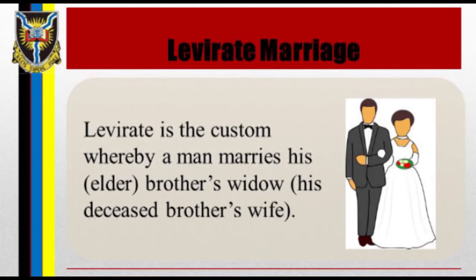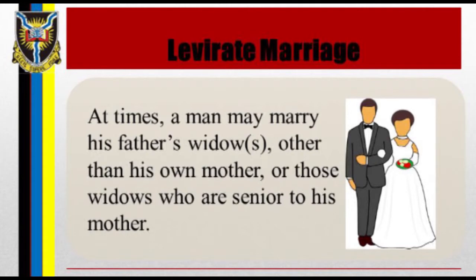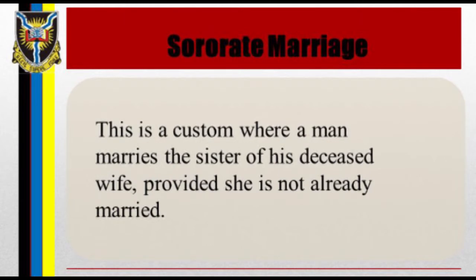Levirate is the custom whereby a man marries his elder brother's widow — his deceased brother's wife. At times a man may marry his father's widows other than his own mother, or those widows who are senior to his mother. Such marriages often involve the younger wife or wives of his deceased father. In African societies it is not unusual for a man to marry a girl of the same age as a son, and thus when he dies the transfer of this wife to his older sons is no problem. In the sororate, a man marries the sister of his deceased wife, provided she is not already married.